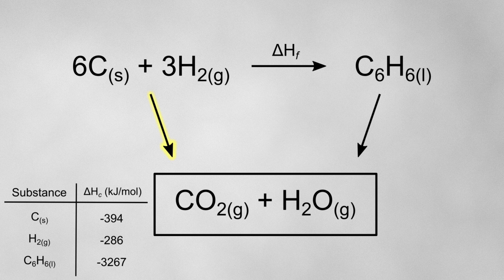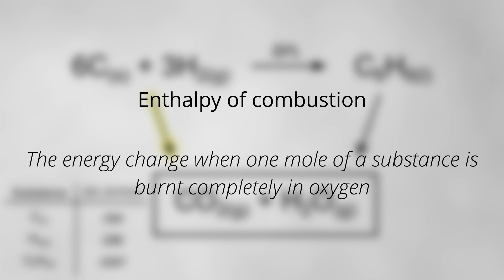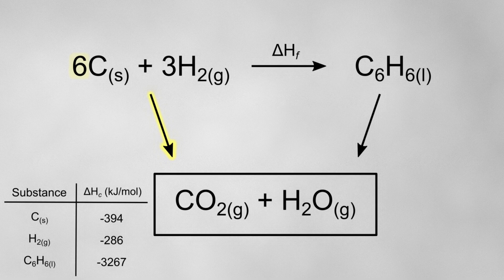On this arrow, I'm going to put the enthalpies of combustion for my reactants. The enthalpy of combustion describes the combustion of one mole of a substance. Since there are 6 moles of carbon in this reaction, I'll need to multiply the enthalpy of combustion for carbon by 6. Similarly, since there are 3 moles of hydrogen, I'll need to multiply the enthalpy of combustion for hydrogen by 3.